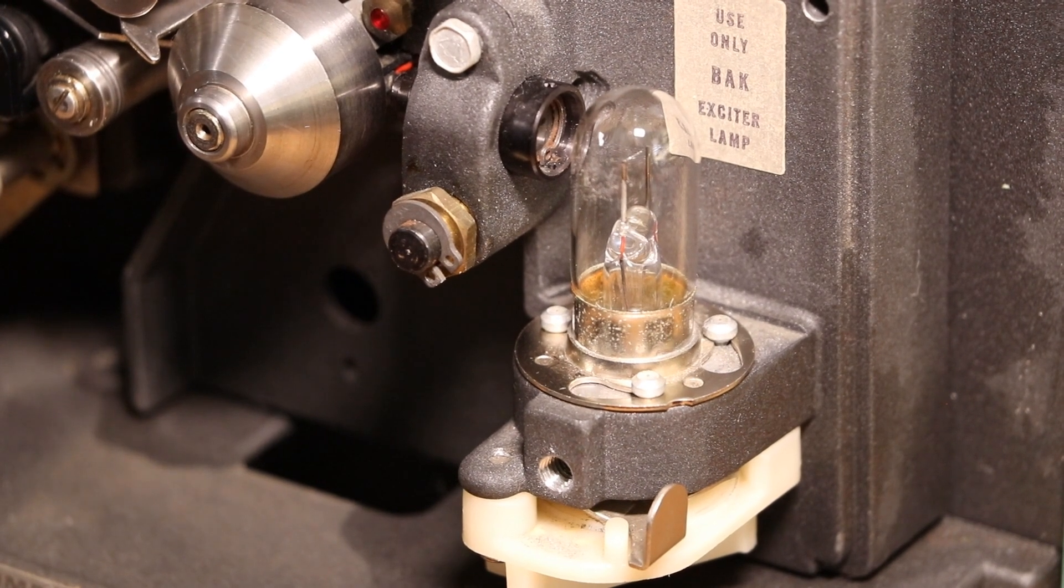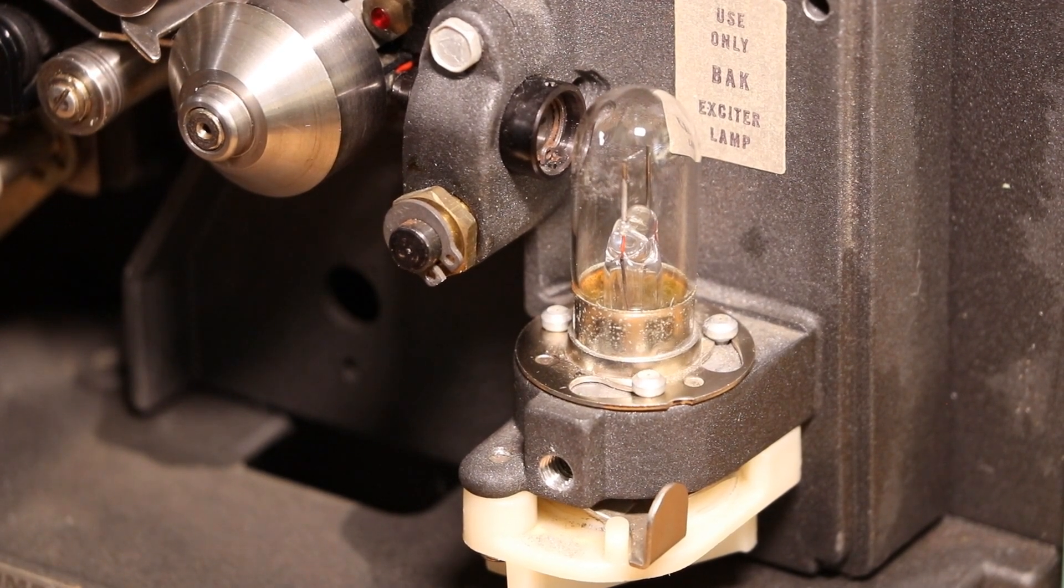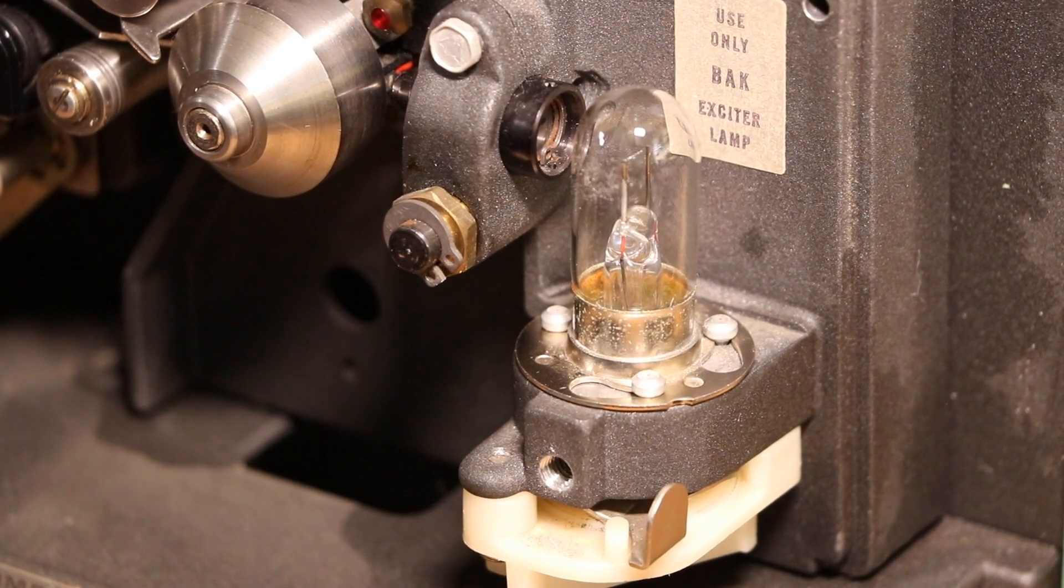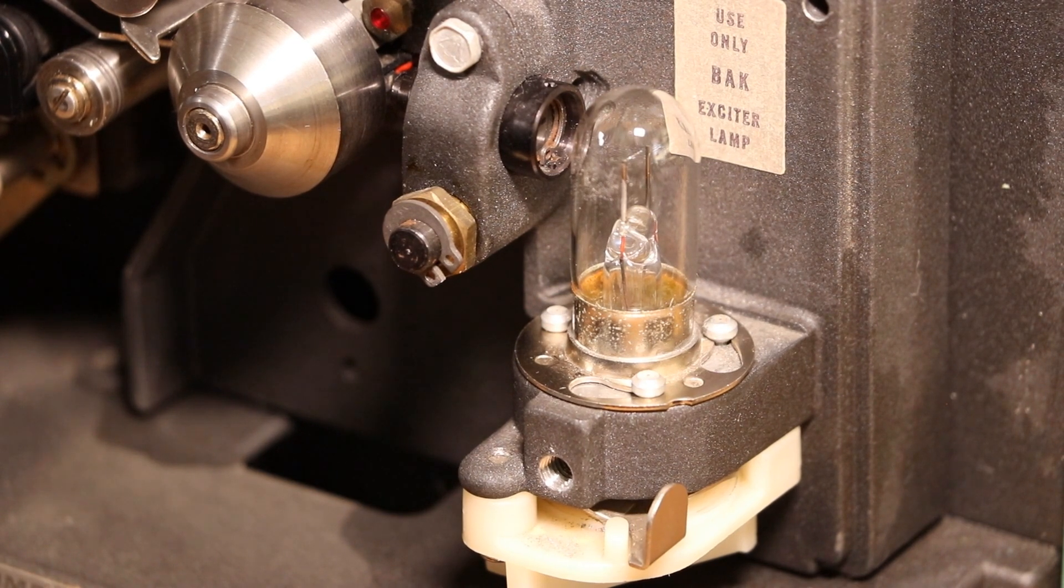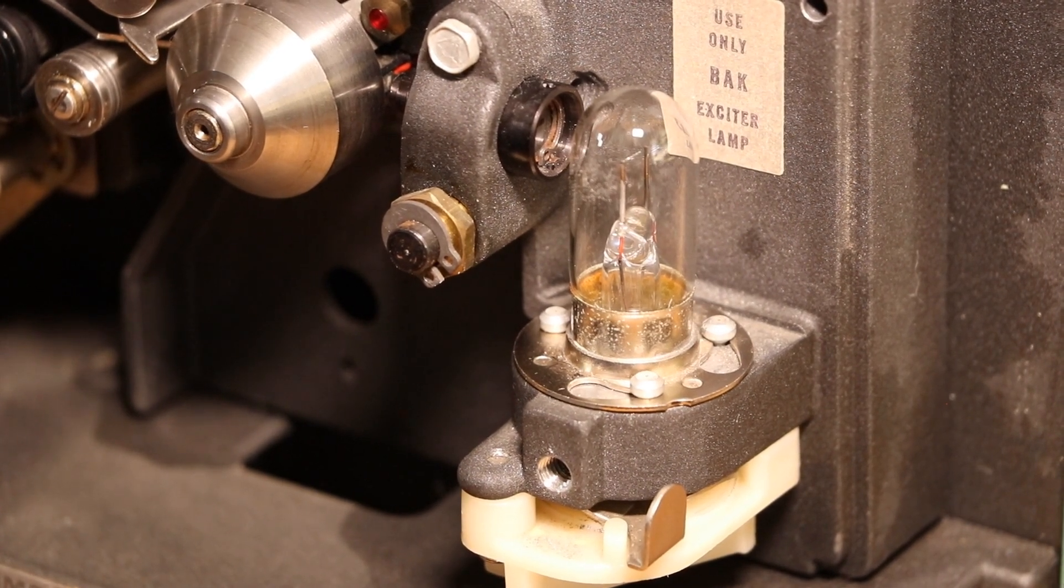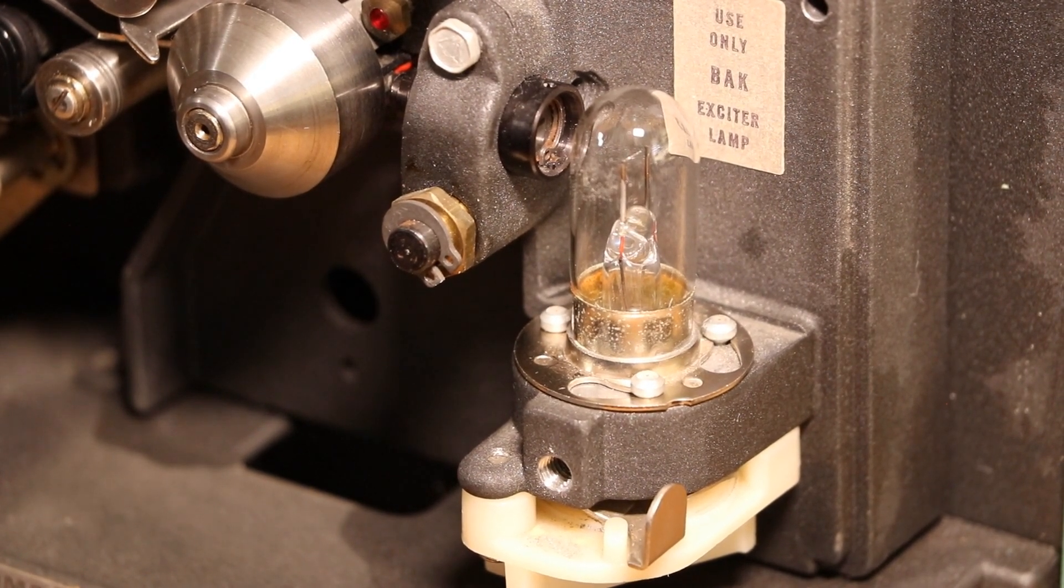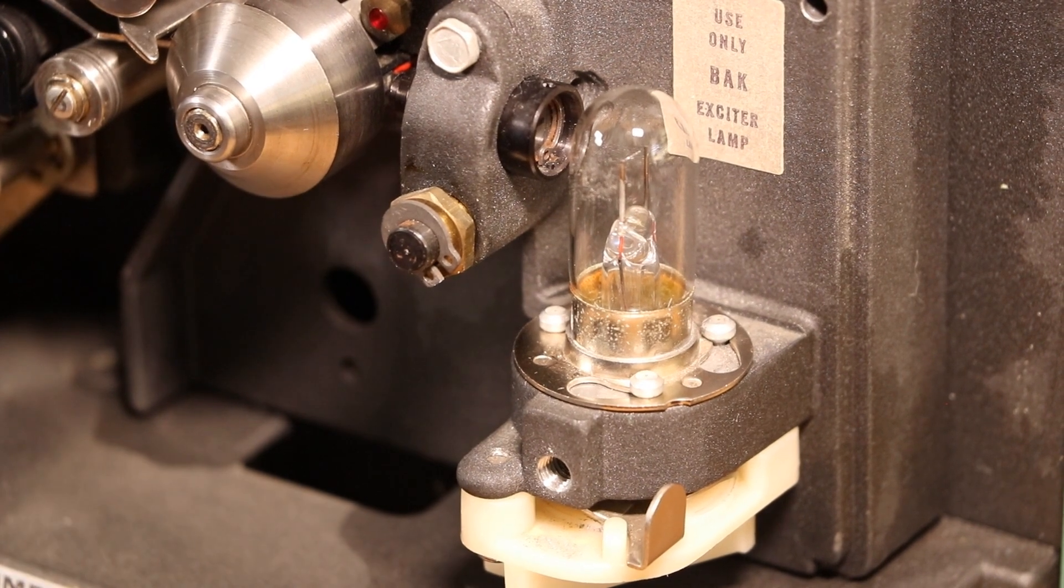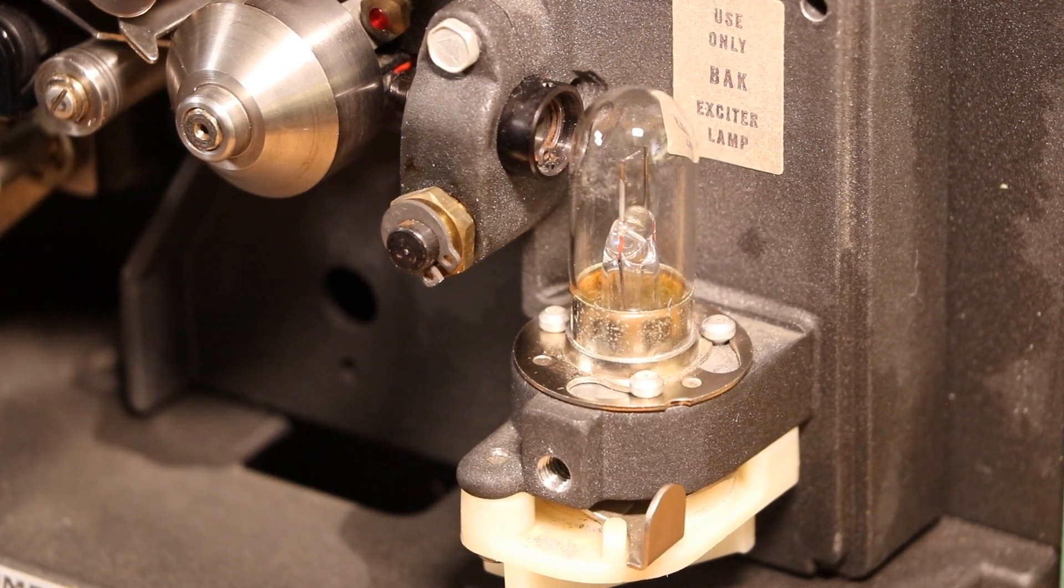I happen to have another known good exciter lamp from another machine. So just drop it back on those pins and turn it to the right a quarter of a turn and lock it in. Then go ahead and turn your projector back on. By the way, I'm only turning this to forward. I'm not actually turning it all the way to turn the projection lamp on because the sound system is on in forward or projection setting. Okay, so now we know for a fact it's not the bulb.